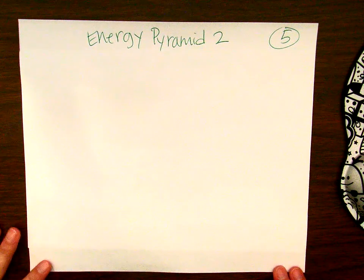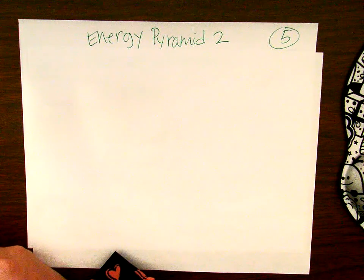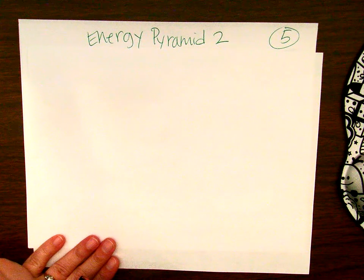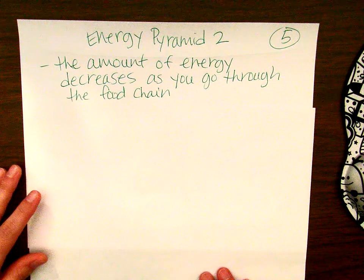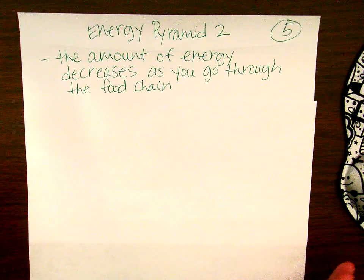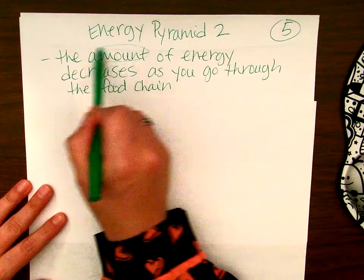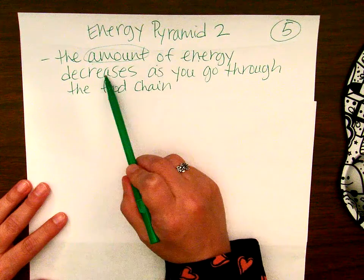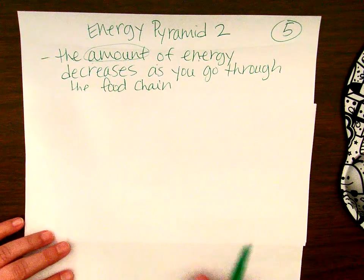We're at our last section of notes and you need to title this one 'Energy Pyramid.' Energy pyramids show the amount of energy, and they show that it decreases as you go through the food chain.